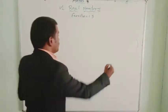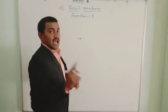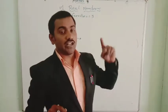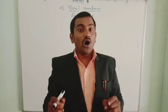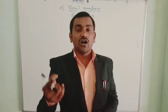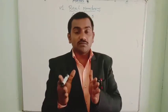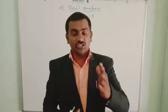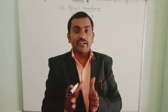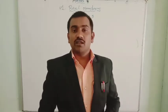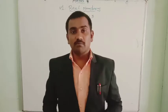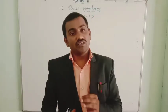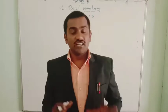All decimals — terminating decimal numbers and non-terminating repeating decimal numbers — are rational numbers. Non-terminating non-repeating decimal numbers are considered irrational numbers.